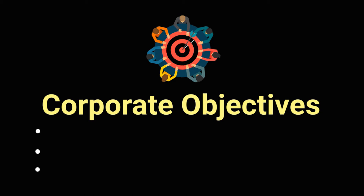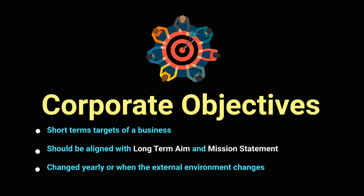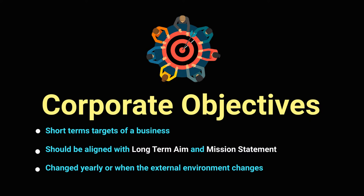Hello and welcome back everyone. Today we will turn our focus towards the third tier of the hierarchy of objectives, which we identified as corporate objectives. The corporate objectives are your short-term targets that the business sets itself. They should be in line with the long-term aim of the business and the mission statement, and you will periodically have to change your objective depending on either the external environment or upon completion of one objective.